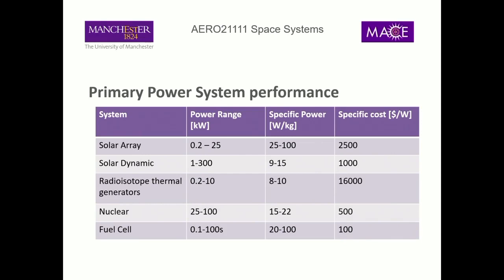Nuclear power has quite good power ranges if you're trying to power very high power requirements, and pretty good specific power. The specific cost is really good — potentially around $500 per watt — but you'd have to put a lot of development into getting there. Solar arrays are pretty much at the forefront of development and terrestrial technologies are also using them, so we can benefit from those innovations. The transfer from terrestrial nuclear technology to space nuclear is quite different from transferring terrestrial solar to space solar.